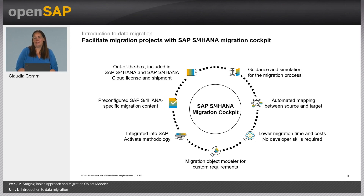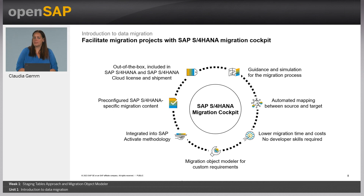Let's have a look at the main capabilities of our migration cockpit. The SAP S/4HANA Migration Cockpit is an out-of-the-box solution. It is included in the SAP S/4HANA licenses and shipment. As soon as you have your S/4HANA system in place, you can start working with the migration cockpit. As a user, you will be guided through the complete migration process, starting with a selection of migration objects — which is your migration scope — executing the mapping tasks, the simulation, and finally the real migration run at the end.